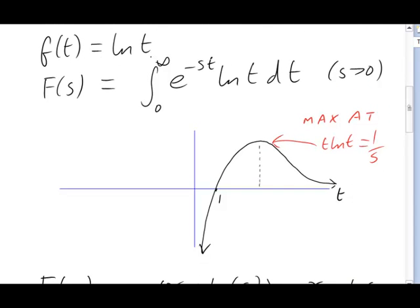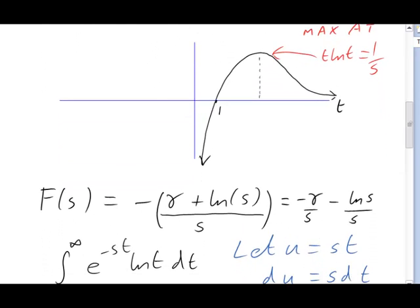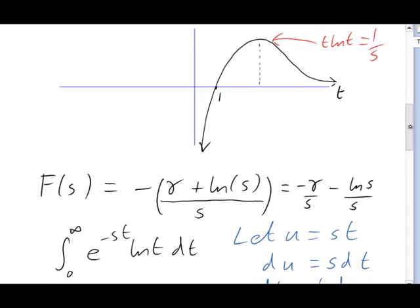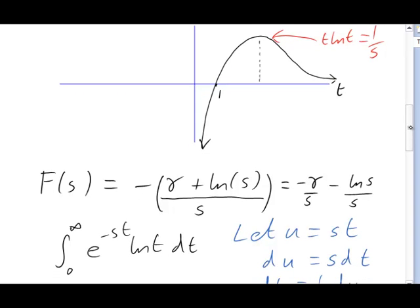Let's go back to the integral. What I'm going to do is to make a simple change of variables. I'm going to let st be called u. There we are. u equals st, and so it follows that du is the same as s dt. As far as u and t are concerned, s is just a constant, of course.